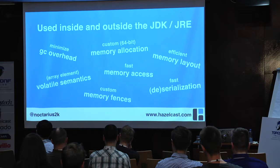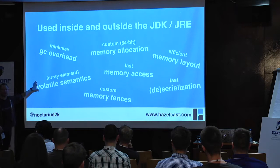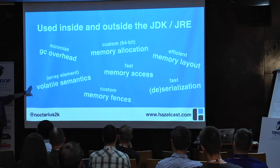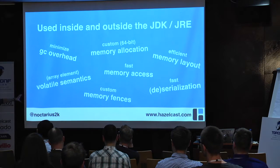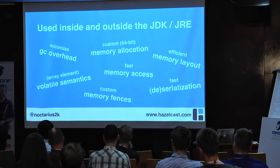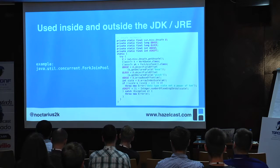My personal favorite: volatile semantics on array elements. If I mark an array as volatile, does that mean all the inner elements of the array are volatile as well? No, it doesn't. Only the array reference itself is volatile. That's a big problem for many use cases — a lot of developers get this wrong, expecting that if they change something in the array, other threads will see it because the array is volatile. That's probably one of the biggest mistakes in the Java memory model.